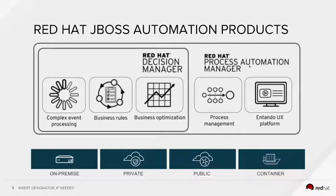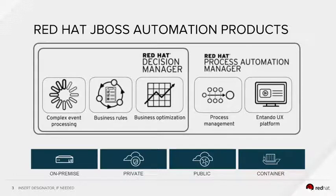It has a sibling called Process Automation Manager, which is a superset of Decision Manager. Meaning that in addition to having all the capabilities provided by Decision Manager, it also provides you with process management and an intuitive UX platform which is used to create graphical flows for your business processes easily using drag and drop without writing any code. Decision Manager, or any of the products in the JBoss automation product suite, can be deployed in bare metal, VMs, or in containers running on private, public, or hybrid cloud.